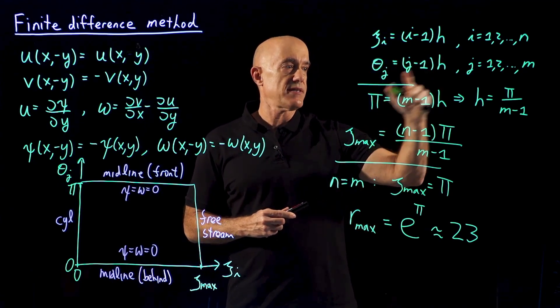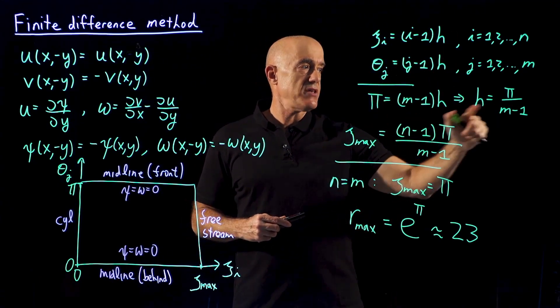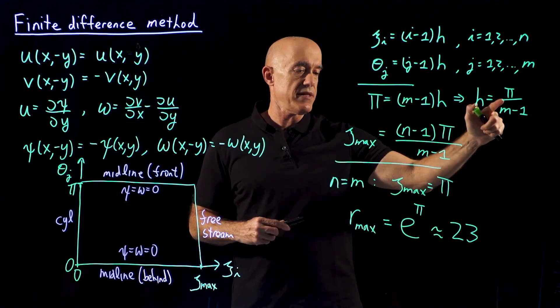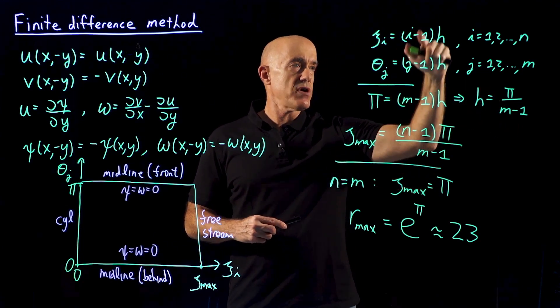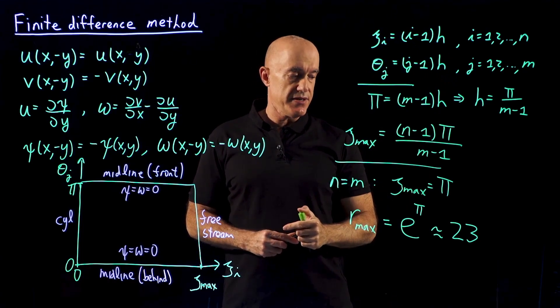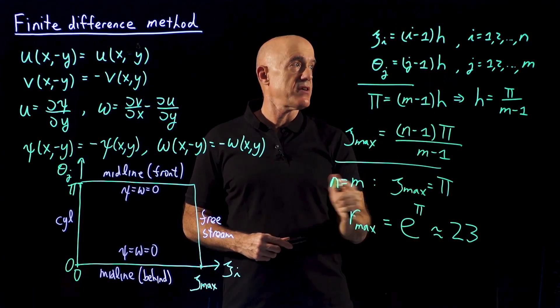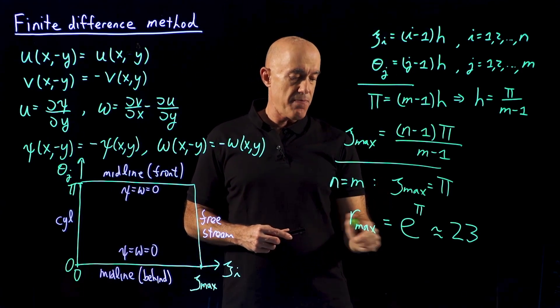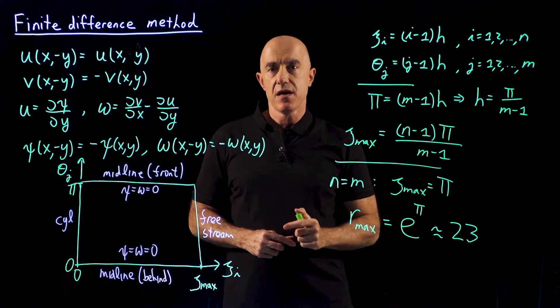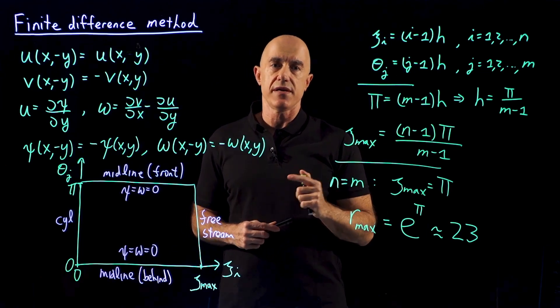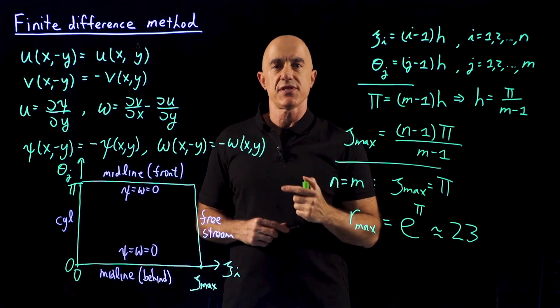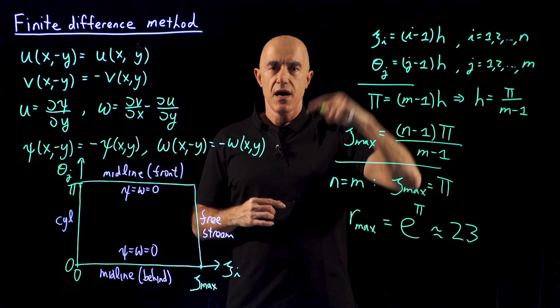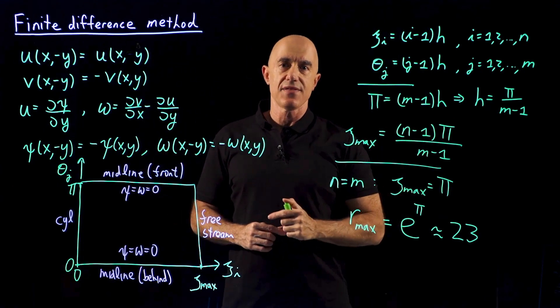Our discretization is quite simple. Our h is π over the number of grid points in θ minus 1. And we're using square grid cells. Then if we choose n equals m, which we will for the steady solution, then our maximum radius will be around 23, considering that the radius of the cylinder is 1. That gives us lots of room above, below, and behind the cylinder.